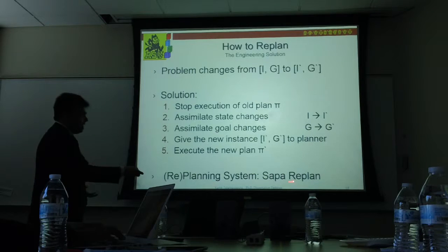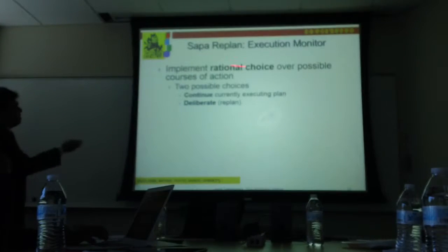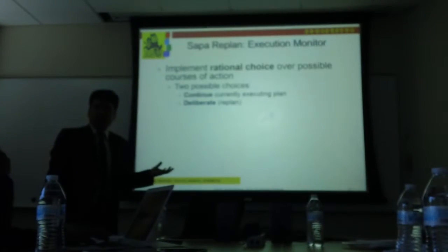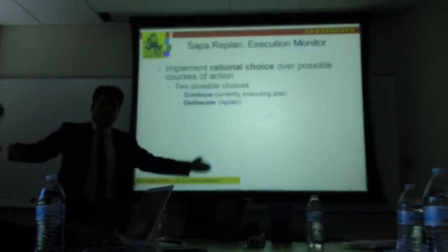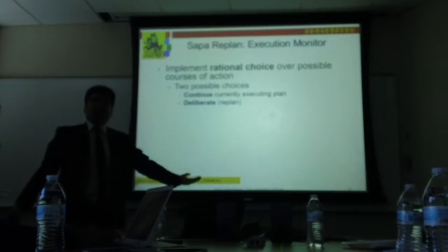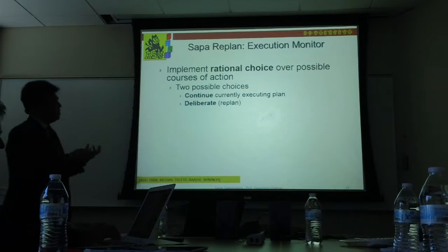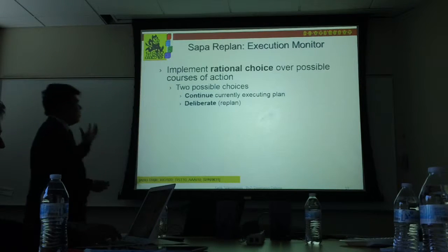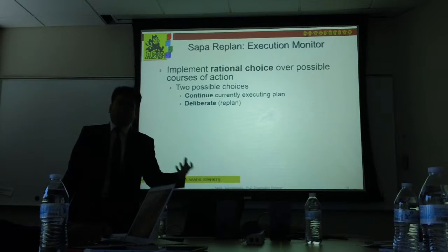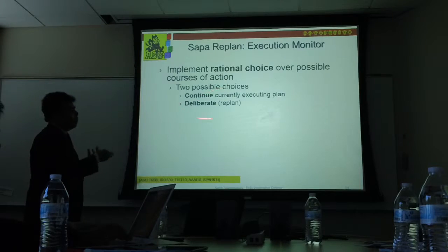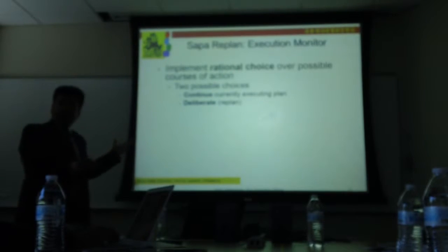We have a separate plan system that is able to do this because of a component known as the execution monitor. The execution monitor sits between the planner and the outside world — between information coming in from the robot, from the human, and so on. One of its roles is to implement rational choice over possible actions: either continue with the current plan or replan to come up with a better plan.